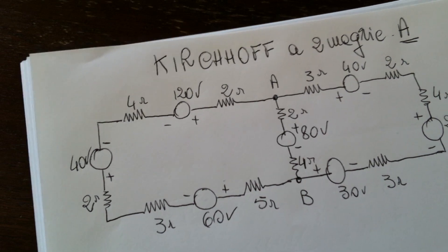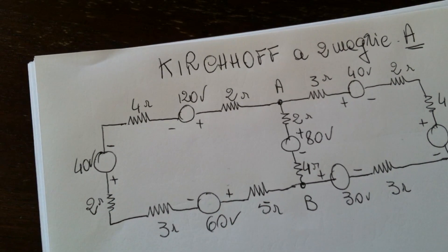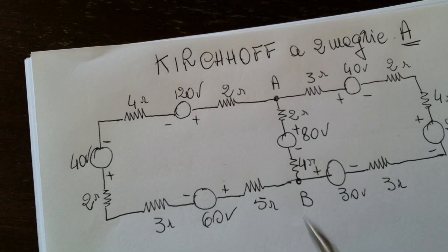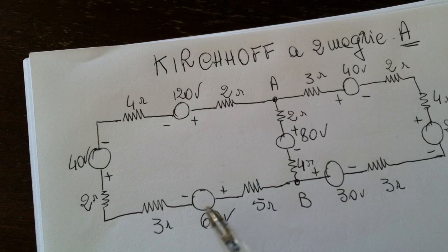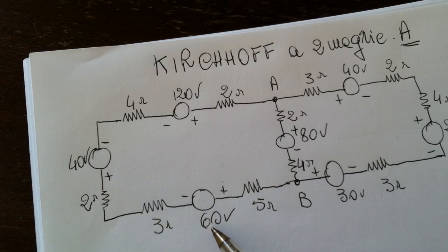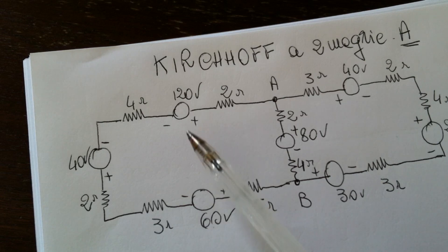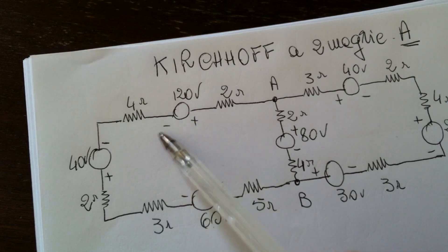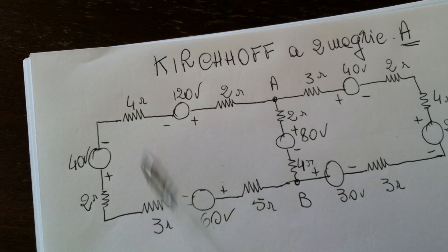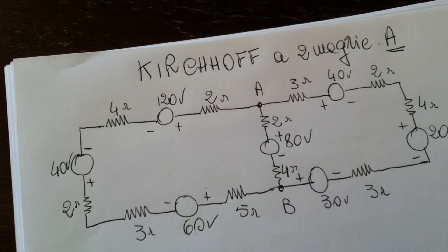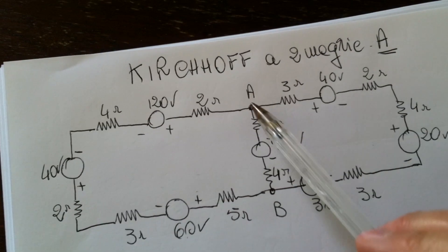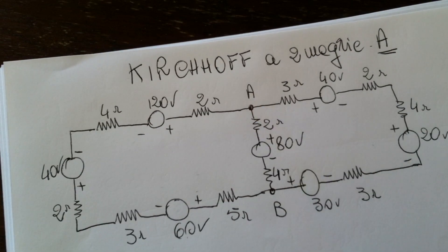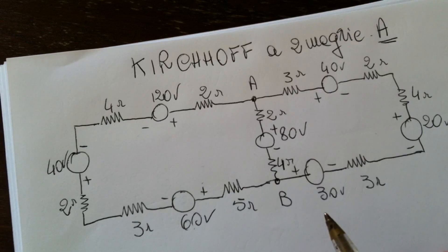Here's a Kirchhoff exercise with two branches. We have some generators with their EMFs, so we have their tensions and their terminals as well, so the plus and minus signs. Then we have some resistors along the two branches. Then we have two nodes, node A and B, also called junctions.